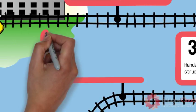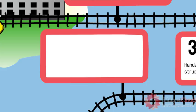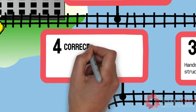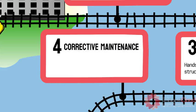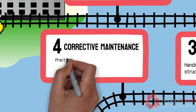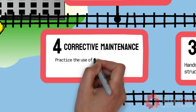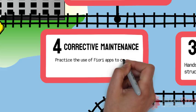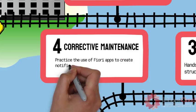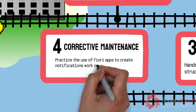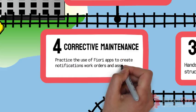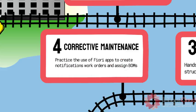We take a deep dive into corrective maintenance in module four. We use Fiori Apps to create work notifications, work orders, assign both functional and equipment bill of materials, among others.